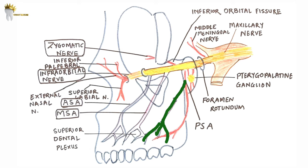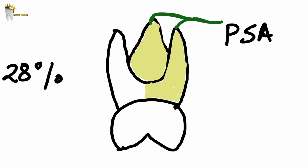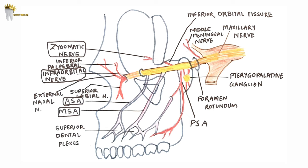The PSA nerve supplies the three maxillary molars — first, second, and third — including their alveoli, periodontal ligaments, and pulpal tissues. There is one exception: in 28 percent of patients, it does not supply the mesiobuccal root of the maxillary first molar.